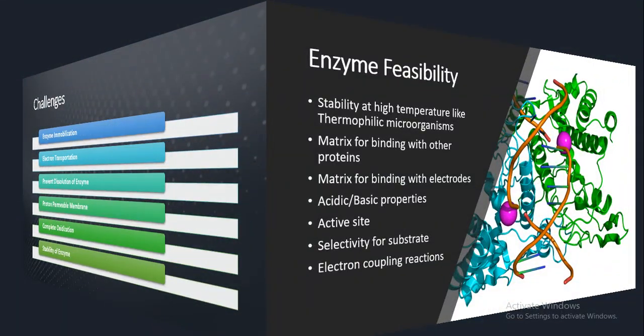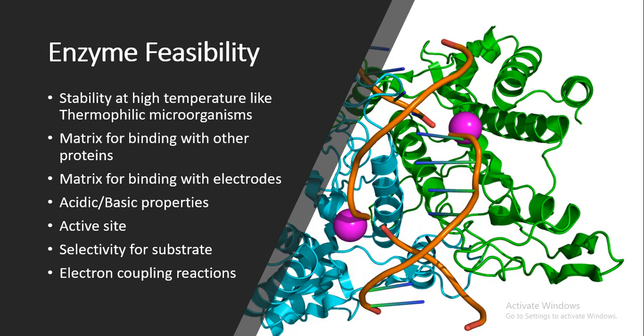Enzyme feasibility: enzymes are stable at high temperatures — for example, enzymes from thermophilic microorganisms are stable up to 100°C. They provide a matrix for binding with other proteins and with electrodes. They have acidic or basic properties, contain an active site where substrate is converted into product, have selectivity for their substrate, and certain enzymes have specific electron-coupling reactions.